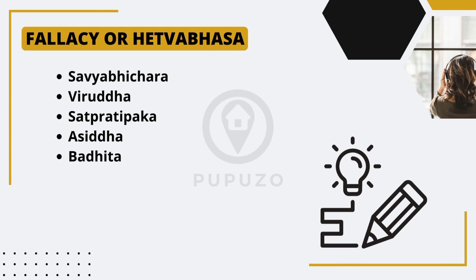Siddhar, also known as the fallacy of unproved assertion, occurs when an argument is based on an unproven or unsupported claim. This fallacy happens when someone makes a statement without providing evidence or logical reasoning to support it. For instance, if someone claims that a new product is the best on the market and that everyone loves it without offering any evidence or proof, the argument becomes fallacious.